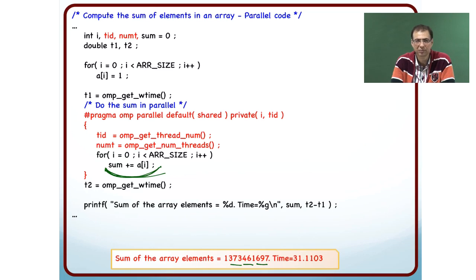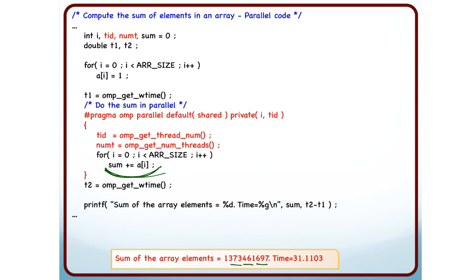All of them are trying to change the value of sum together. So, there is a race condition over here.